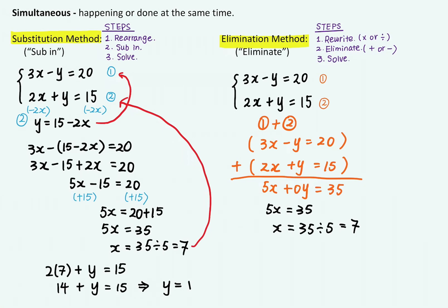Again, if I take x equals 7 back to the first equation, 3 times 7 minus y equals 20. And I can solve for y. So 3 times 7 equals 21. 21 minus y equals 20. And I can work out y is equal to 1.